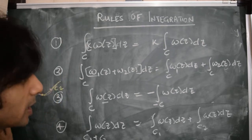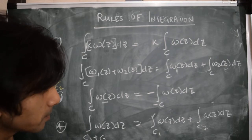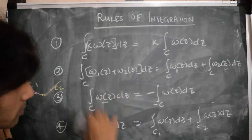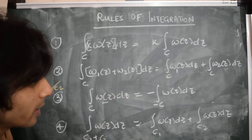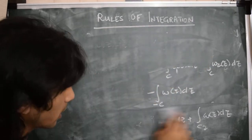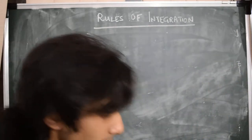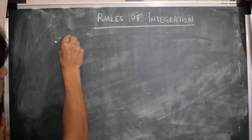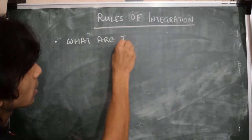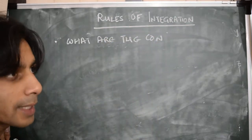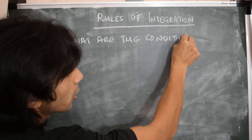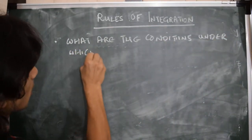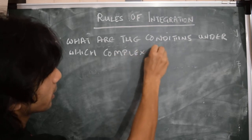So these essentially are the four main rules of integration, and they are extensions of the ones we've already encountered for integrals of functions of one real variable. However, let's keep these in mind and think about one very important idea we started discussing in the introductory video to integration of complex functions: what are the conditions under which the integral of a complex function is independent of the path or contour that we integrate along?